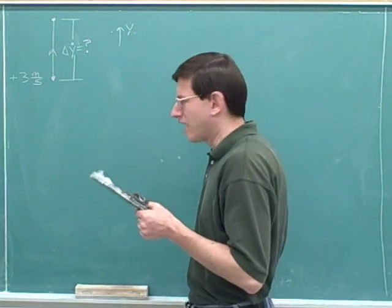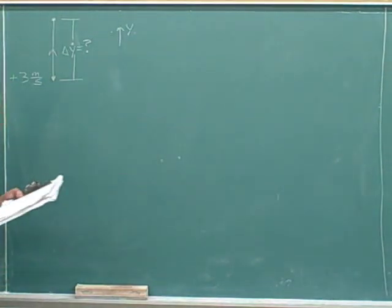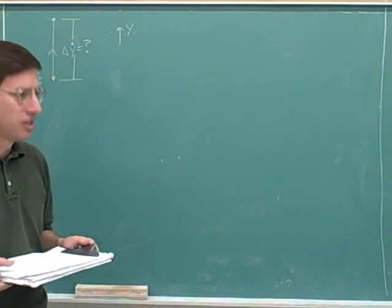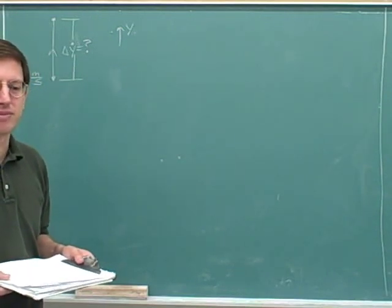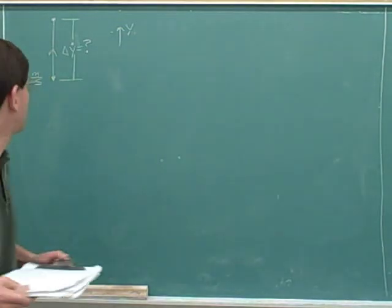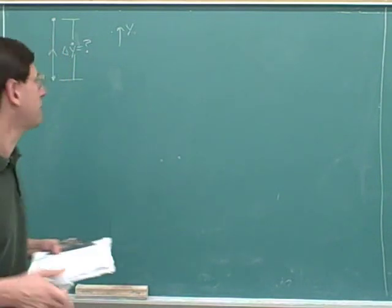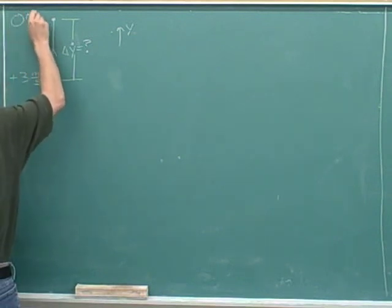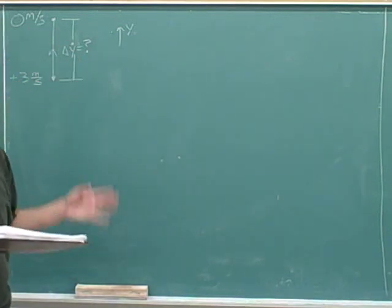We've indicated the velocity at the initial point, so it would be symmetric to indicate the velocity at the final point as well. The question is, how high does the object go before it reaches its peak? The peak is how high the object goes. This point up here must be the peak of the trajectory — the highest the object will go. At its peak, the object's velocity is zero. That was the really important hidden information in this problem.